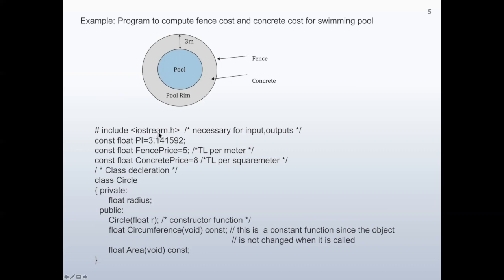For input-output operations, we are including iostream.h. And we are declaring constants: Pi is a float type with value 3.141592. Another constant declared here is the fence price — it is a floating number and the price is declared as 5, for example TL per meter. Another constant is concrete price, again a floating number, declared as 8.